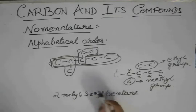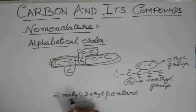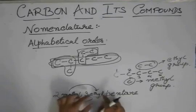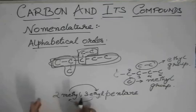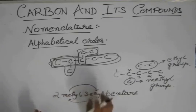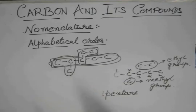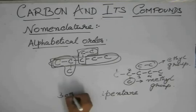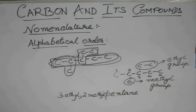But what the alphabetical order says that ethyl should come before methyl. So E comes before M, so ethyl should come before methyl. So this three ethyl will come first and this two methyl will come second. So it's actually three ethyl, two methyl pentane.